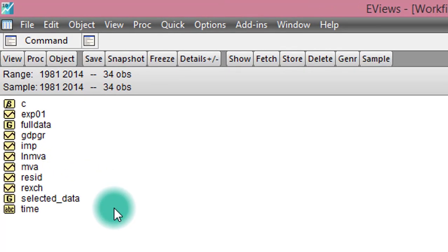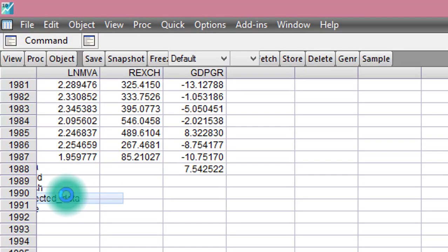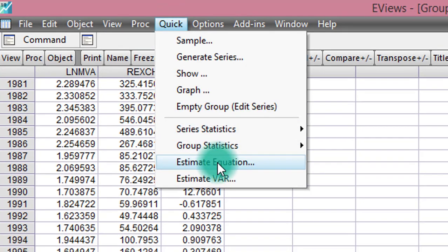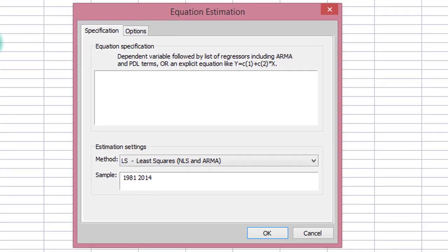eViews is launched, and for this tutorial, I'll be using the log of manufacturing value added, the real exchange rates, and the GDP growth rate. We want to test if a long-run relationship exists among these variables. So to do that, we begin by going to Quick, click on Estimate Equation, and go ahead to list the variables.